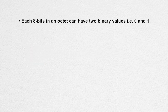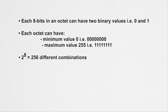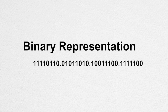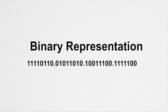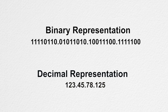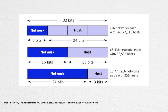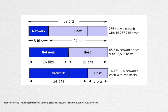Each 8 bits in the octet can have 2 binary values, that is 0 and 1. Therefore, each octet can have a minimum value of 0 (that is, 8 zeros) to a maximum value of 255 (that is, all ones), and in total we have 2 raised to the power 8, that is 256 different combinations. To remember this 32-bit address in binary is a bit difficult, so for better human understanding it is expressed in decimal format. This decimal format is for human understanding only; the computer understands it in binary format. In decimal, the IP address is expressed as, for example, 123.45.78.125. These octets are used to create and separate different classes. An IP address consists of 2 parts: network and host. The network part identifies a particular network among different networks, and the host part identifies a device of a particular network.